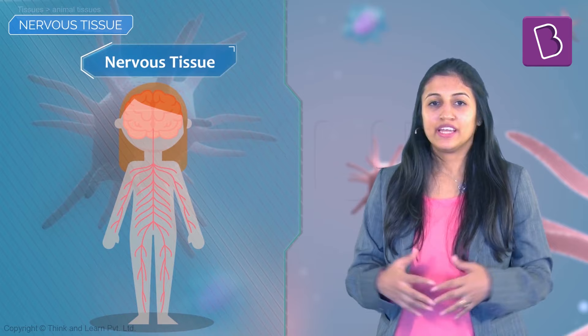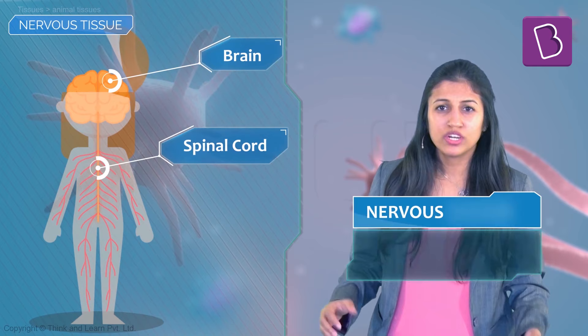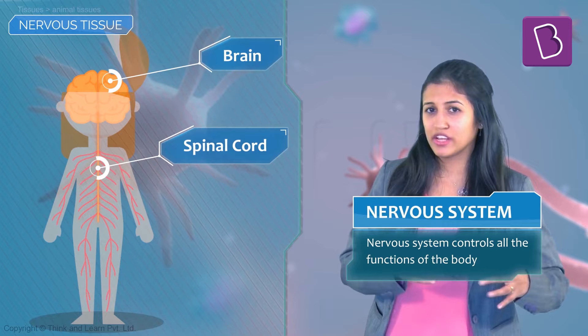Nervous tissue comes together to form the nervous system of the body, whose main components are the big boss — the brain and the spinal cord. The nervous system takes all important decisions for you about what the body should do and how it should function. Since this is such an important system, you would guess that the cells in it would be super special too.